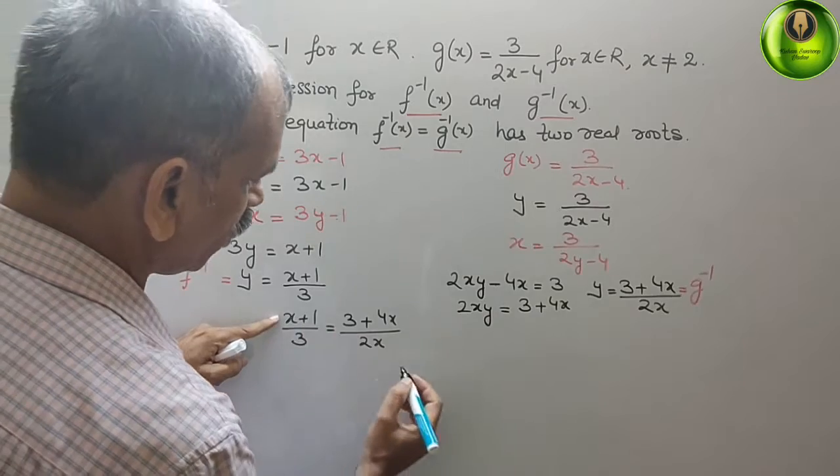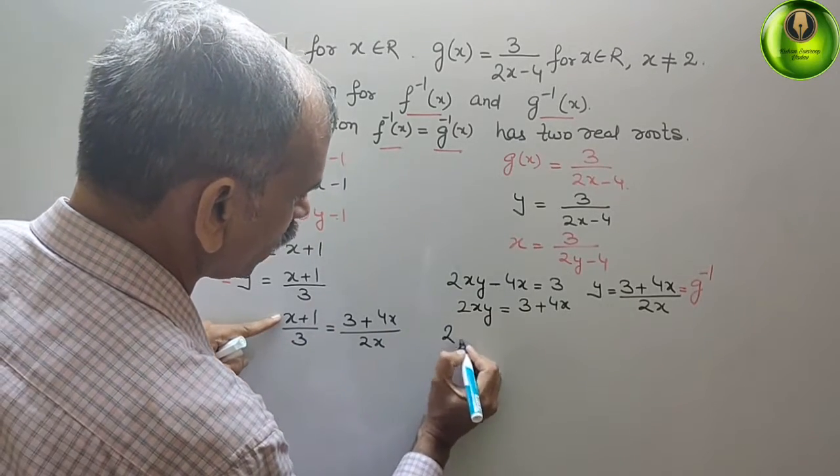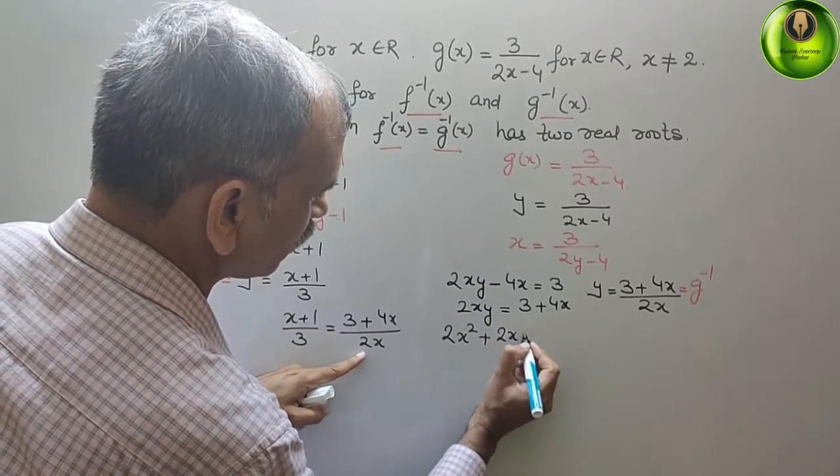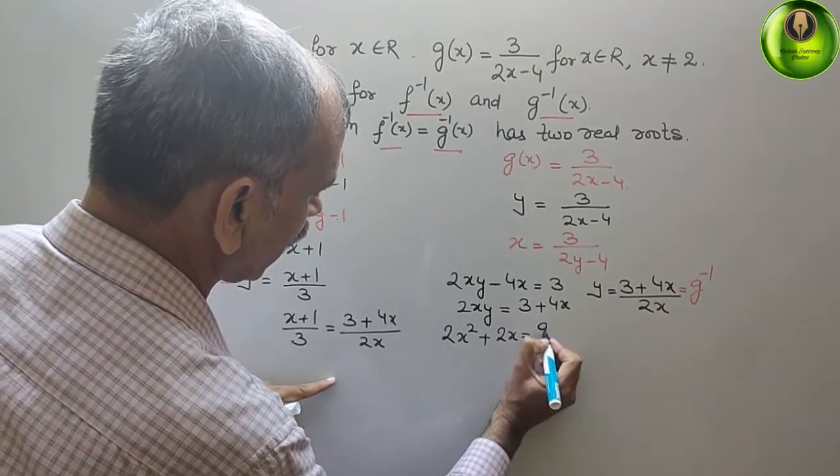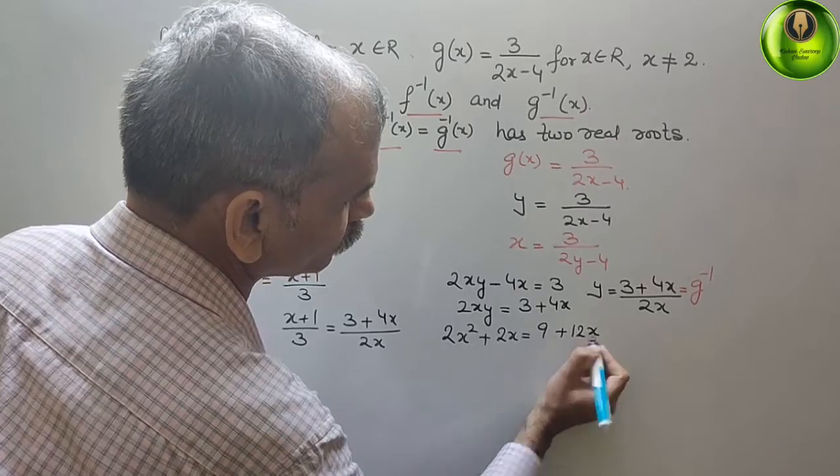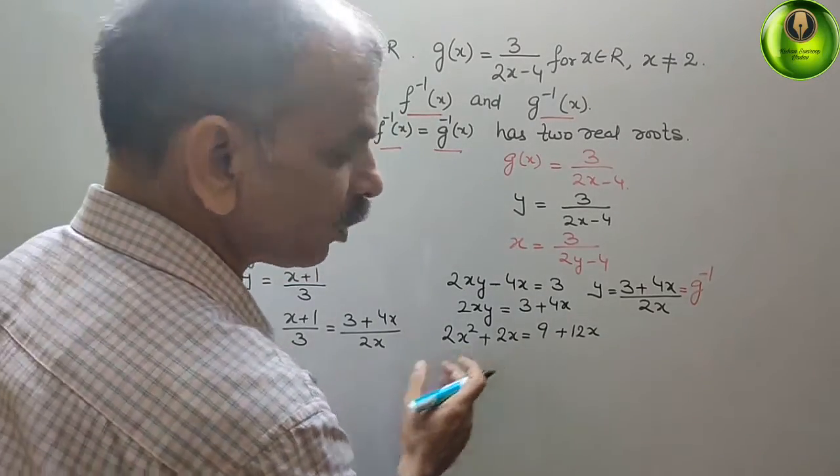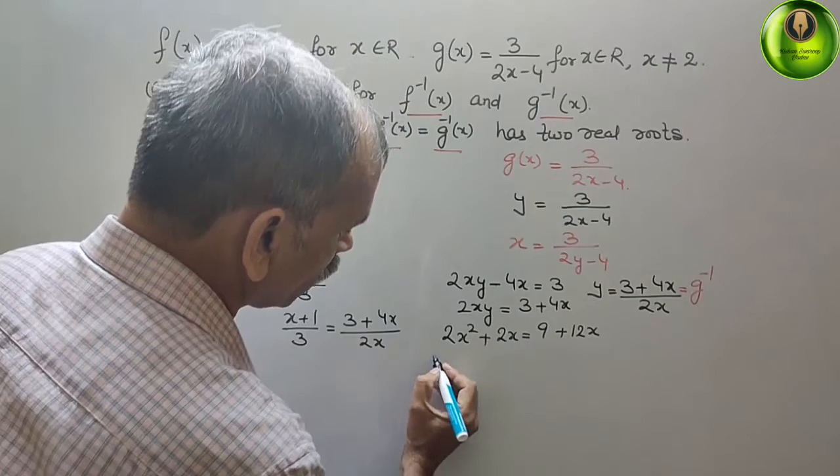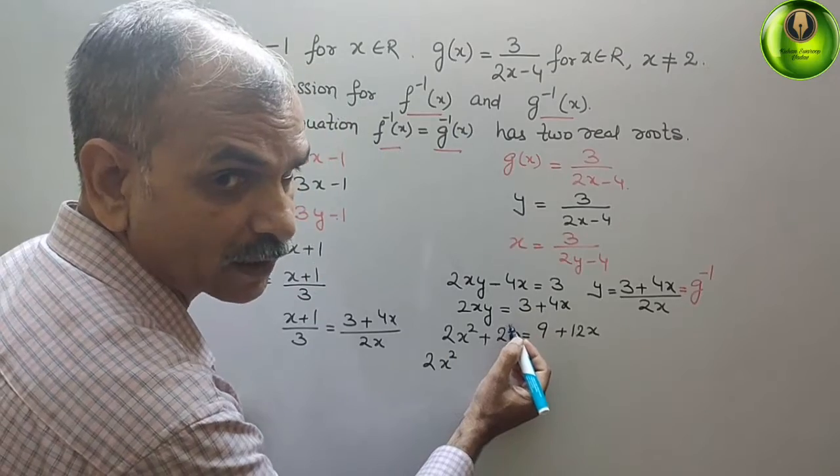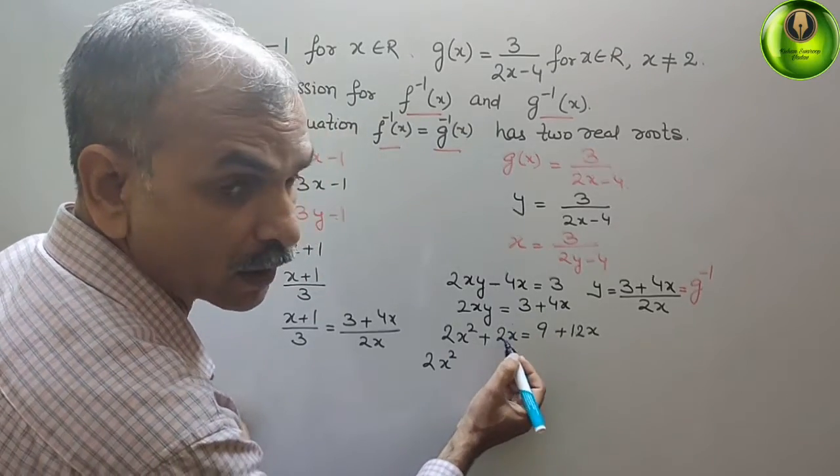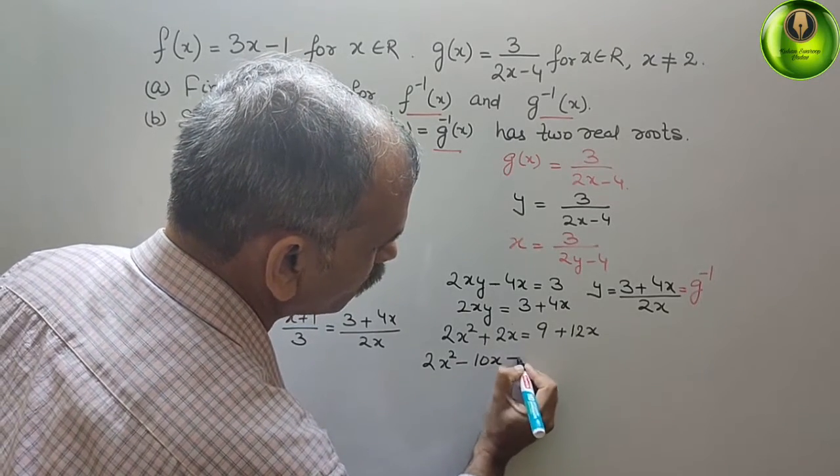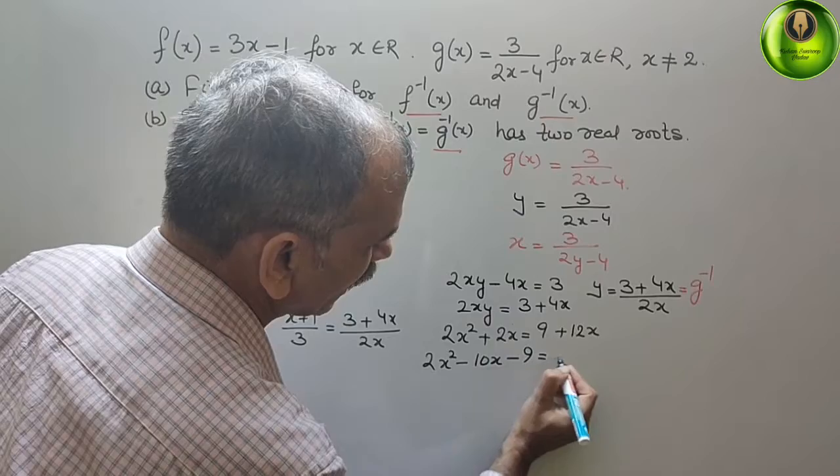Now go for cross multiplication. So here it will be 2x into x is 2x square plus 1 into 2x is 2x, that equals 3 into 3 is 9 plus 3 into 4x is 12x. Bring everything to your left side. It will be 2x square and 12x here becomes minus 12x. Minus 12x plus 2x is minus 10x, and this will become minus 9, that gives you 0.